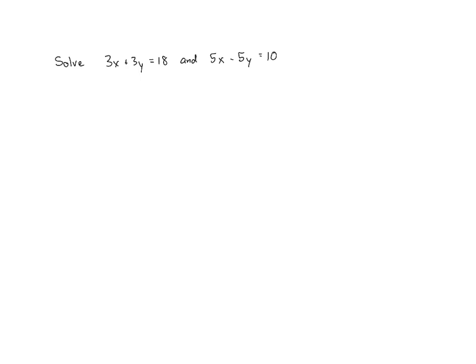And there is something that we can do to these equations to make things simpler. In the first equation, if you'll notice, 3x, 3y, and 18 are all multiples of 3. So we can simplify things by dividing both sides of that equation by 3.